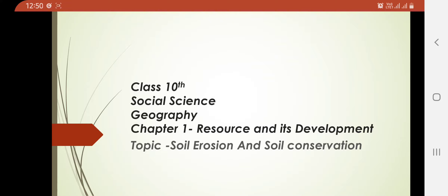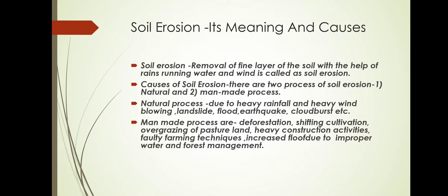Let's start today's lecture with soil erosion — its meaning and causes. You have already learnt this topic in your earlier classes. The removal of the top fertile layer of the soil is what we call soil erosion. Specifically, removal of the fine layer of the soil with the help of rain, running water, or wind is what we call soil erosion.